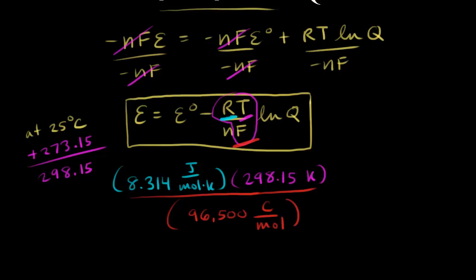This is equal to 0.0257. And for units, Kelvin would cancel out, moles would cancel out. That gives us joules over coulombs, which is equal to volts. So this is equal to volts.